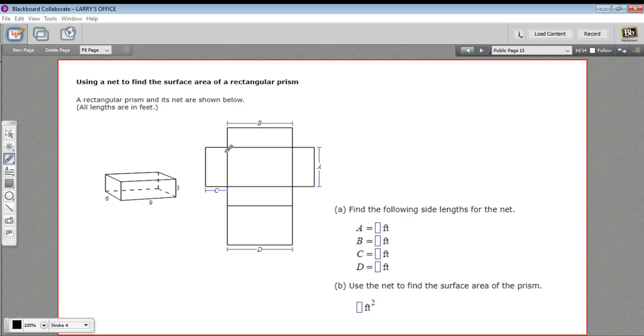A net for a rectangular prism—you can think of it as if this box, this prism, was made out of paper and then it was unfolded and laid flat on a table. That's what a net is. It allows you to see all the sides at the same time.